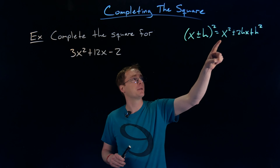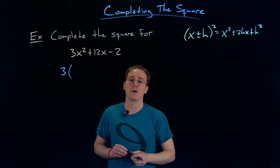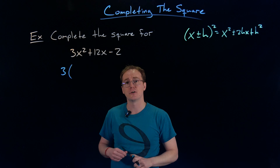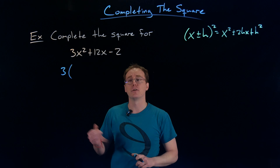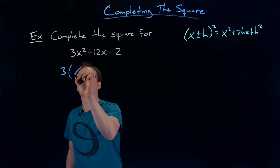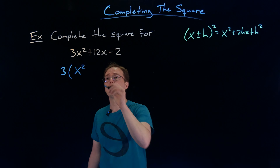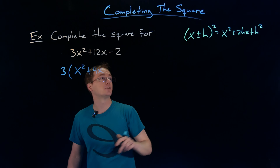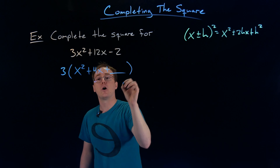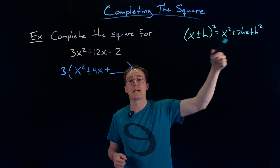So that's how we're going to start this process — trying to make it look more like x squared by dividing away the factor of 3. When we're completing the square it's almost always, at least initially, focusing on those first two terms, the quadratic and linear term. So we're just going to factor that 3 out of those first two terms. If we factor a 3 out of 3x squared, we're left with x squared. And if we factor a 3 out of 12x, we're left with 4x. So now this is like our x squared plus our 2hx linear term, and we're going to need a blank space for the constant we need to add in to make it a perfect square trinomial.